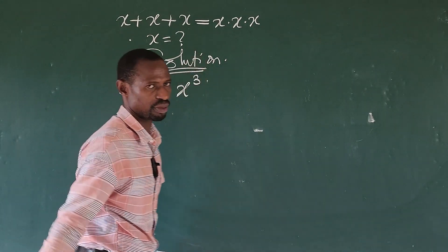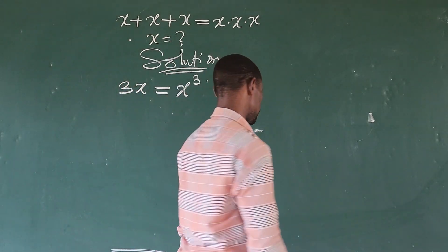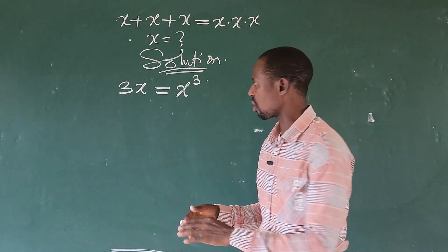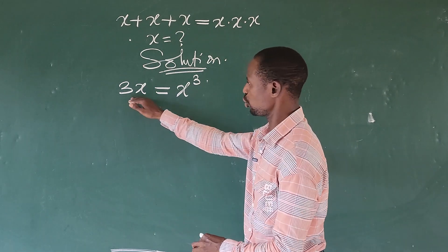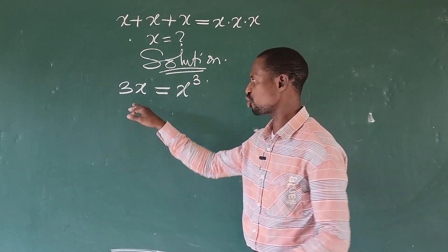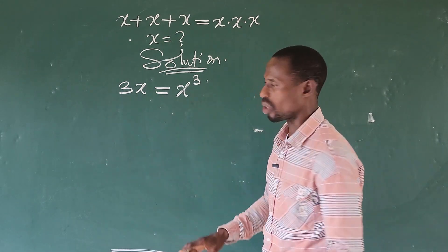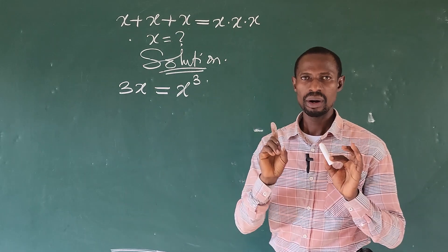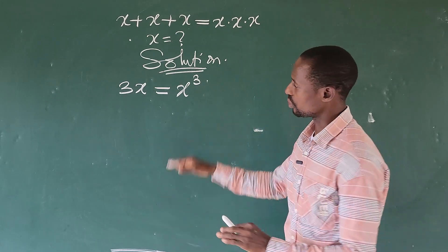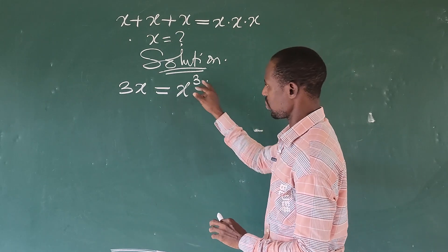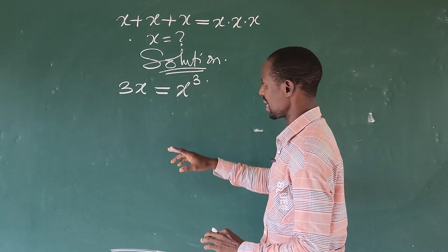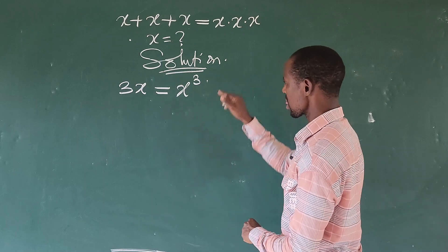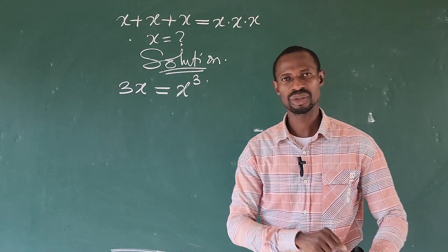We all know this, right? Now never make the mistake of dividing through by x. If you divide through by x, we are going to get only 2 roots. But with what we have here, it suggests that we have 3 roots.